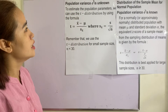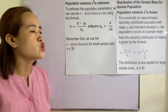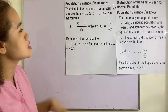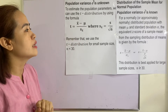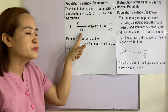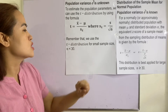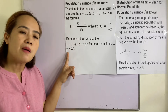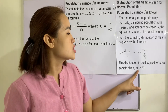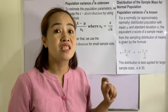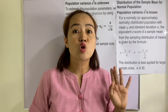When population variance is unknown, to estimate the population parameters we can use the t-distribution, using the formula: t equals the sample mean minus the population mean divided by the standard deviation of the sample mean. Remember that we use the t-distribution for small sample size — if your sample size is less than 30, we use the t-distribution. If your sample size is greater than or equal to 30, we use the z-distribution.